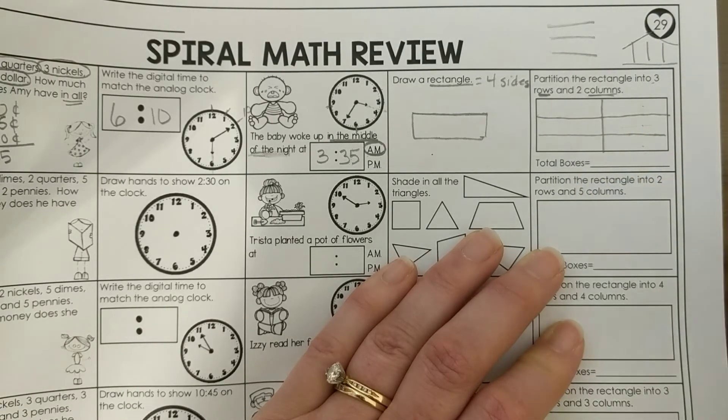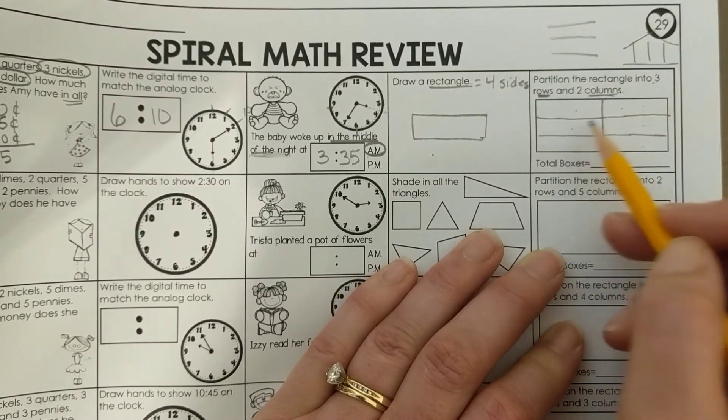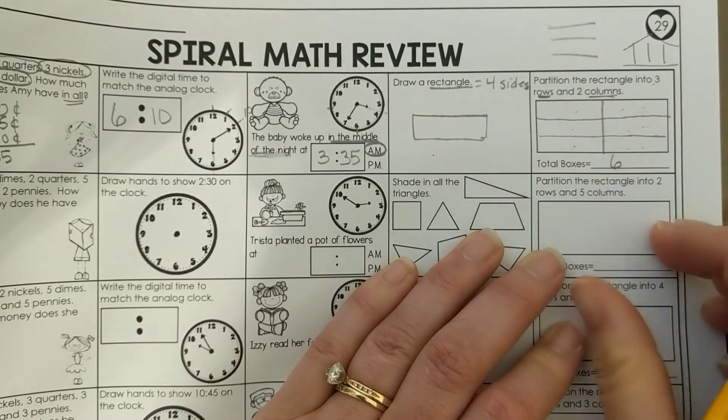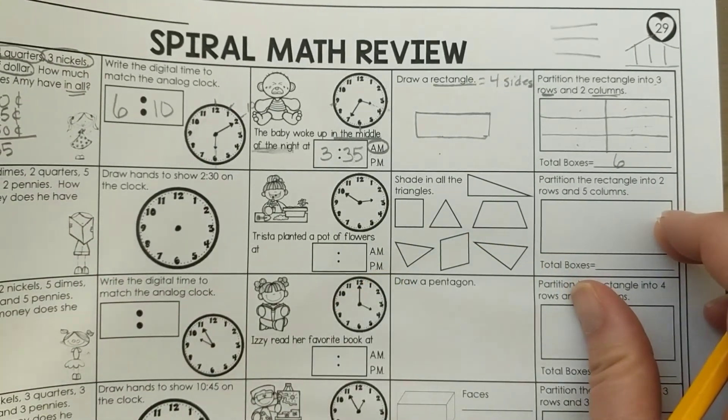We can count our total number of boxes now: 1, 2, 3, 4, 5, 6. I have six boxes when I partitioned this rectangle.